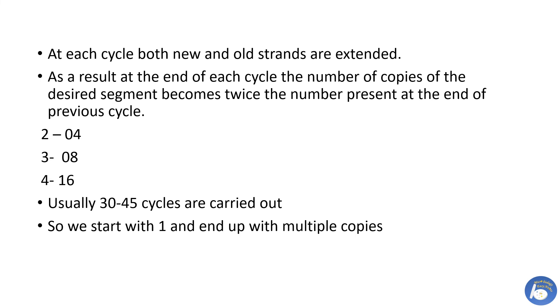At each cycle, both new and old strands are extended. As a result, at the end of each cycle, the number of copies of the desired segment becomes twice the number present at the end of the previous cycle. For example, at the end of the second cycle we have four copies, at the end of the third cycle we have eight copies, and at the end of the fourth cycle we have 16 copies. Usually 30 to 45 cycles are carried out. So we start with one copy and end up with multiple copies of DNA.